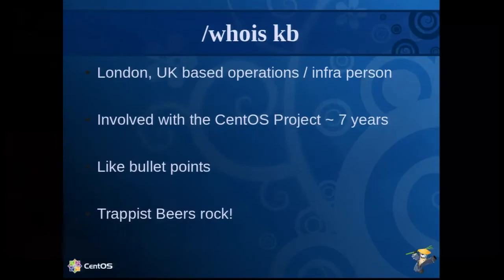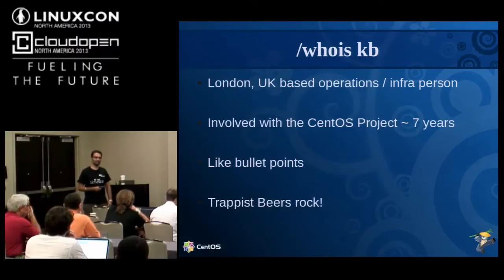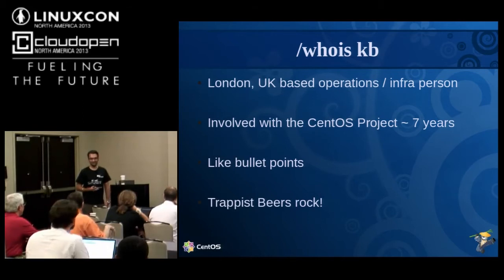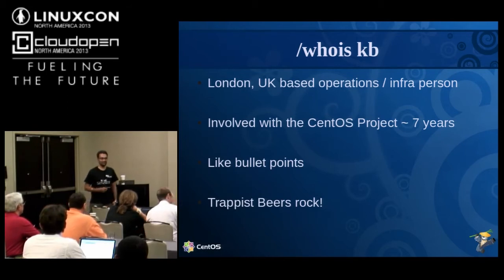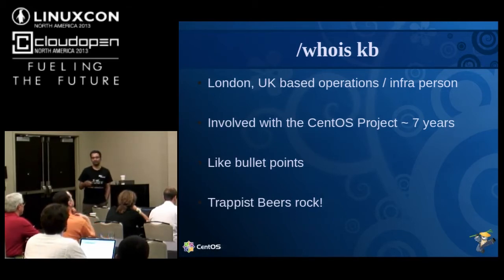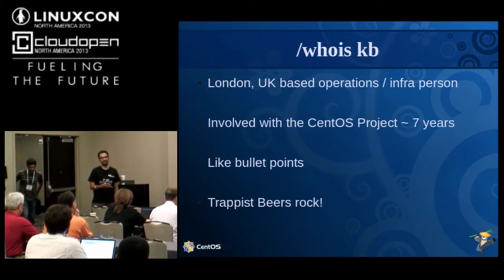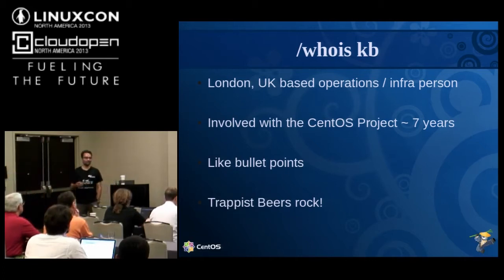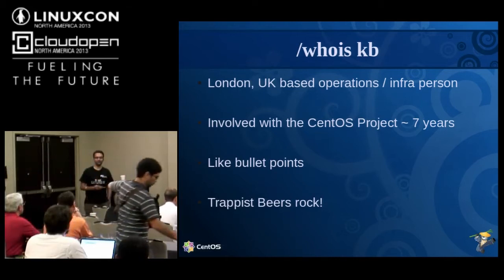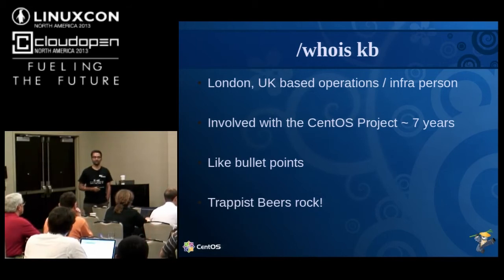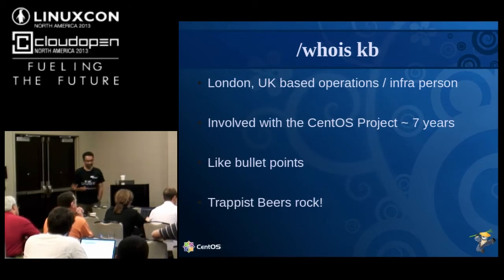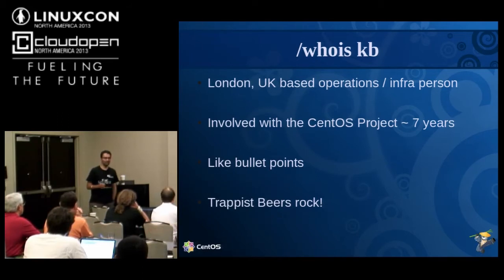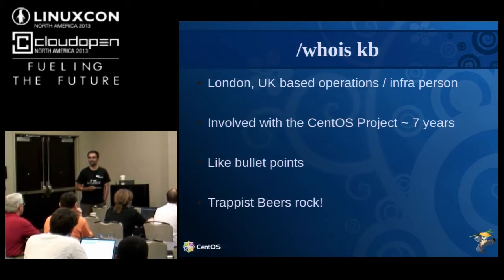A bit about me: I'm based out of London in the UK. I love the rain — I don't know why people have a problem with it. I had to shut my machines down in the garage because it was getting so warm. I've been involved with the CentOS project for about seven years, because I was doing something for my employer at the time that didn't work on any other platform, and the amount of money Red Hat wanted to support us was way too much — about four or five zeros more than we were ready to pay. CentOS seemed like a good place to be, so I joined the community. I love bullet points and I love Trappist beer — I haven't gotten around the whole IPA infatuation in the US.